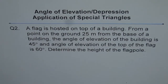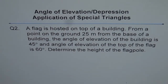Question 2. A flag is hoisted on top of a building. From a point on the ground 25 meters from the base of a building, the angle of elevation of the building is 45 degrees, and the angle of elevation of the top of the flag is 60 degrees. Determine the height of the flag.